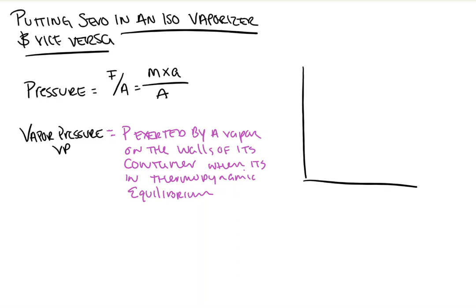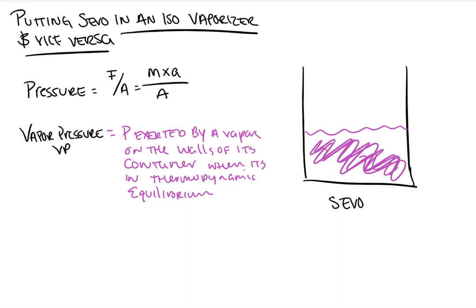The way I think about this: if we have a container — we'll call this the sevo container — filled halfway up with sevoflurane, and we give it a lid for this thought experiment. Some amount of the sevoflurane will become vapor in this container; it's going to leave the liquid phase and go up into the vapor. All these molecules bounce around, bounce against one another, bounce against the walls, and some of them will re-enter the liquid phase.